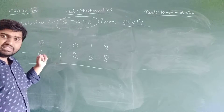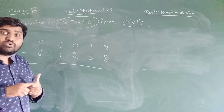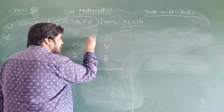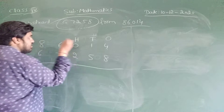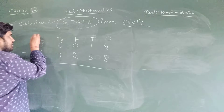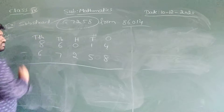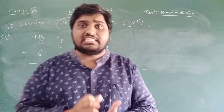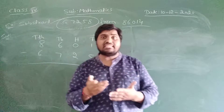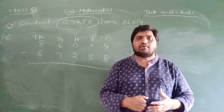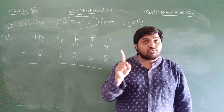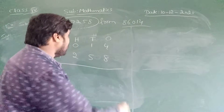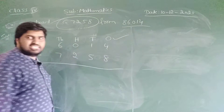Now, for subtracting these numbers, I am going to divide the place values — that is 1, 10, 100, 1000, 10,000 — which is very important. Now dear children, you know the properties of subtraction. The property of subtraction is: always we have to subtract the ones first. See here also I am going to subtract the ones first.